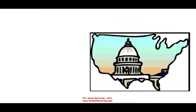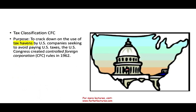Congress figured this out, and in 1962 they decided to create a new tax classification for corporations called the Controlled Foreign Corporation, or CFC. The purpose was to crack down on the use of tax havens by U.S. companies seeking to avoid paying U.S. taxes. Bear in mind, you cannot avoid paying taxes forever if you bring the money into the U.S. via dividend, then you have to pay taxes. The Tax Cuts and Jobs Act changed that as well. U.S. Congress created these Controlled Foreign Corporation rules in 1962.